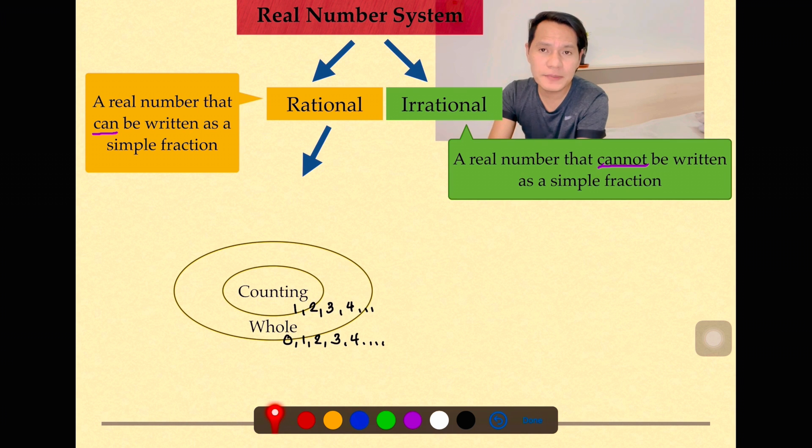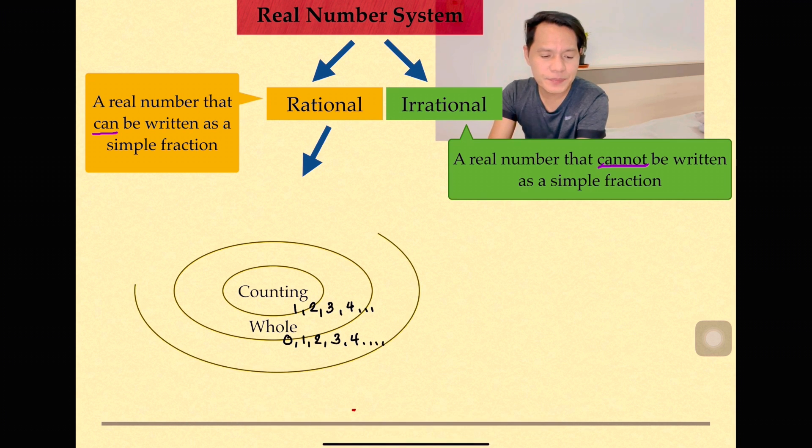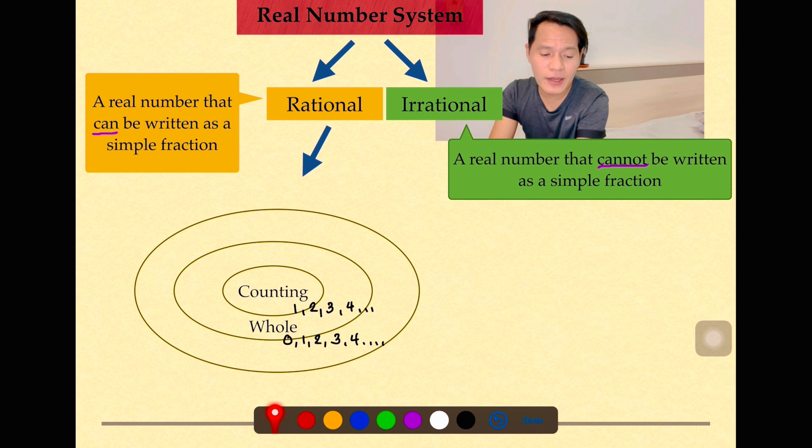Next one is a bigger circle again, wherein whole numbers and counting numbers are part of it. There you go, the integers. You have 0, to the right of that are the positive, and of course here in integers, we now have the negative. So those are integers: the negative, the 0, and the positive.